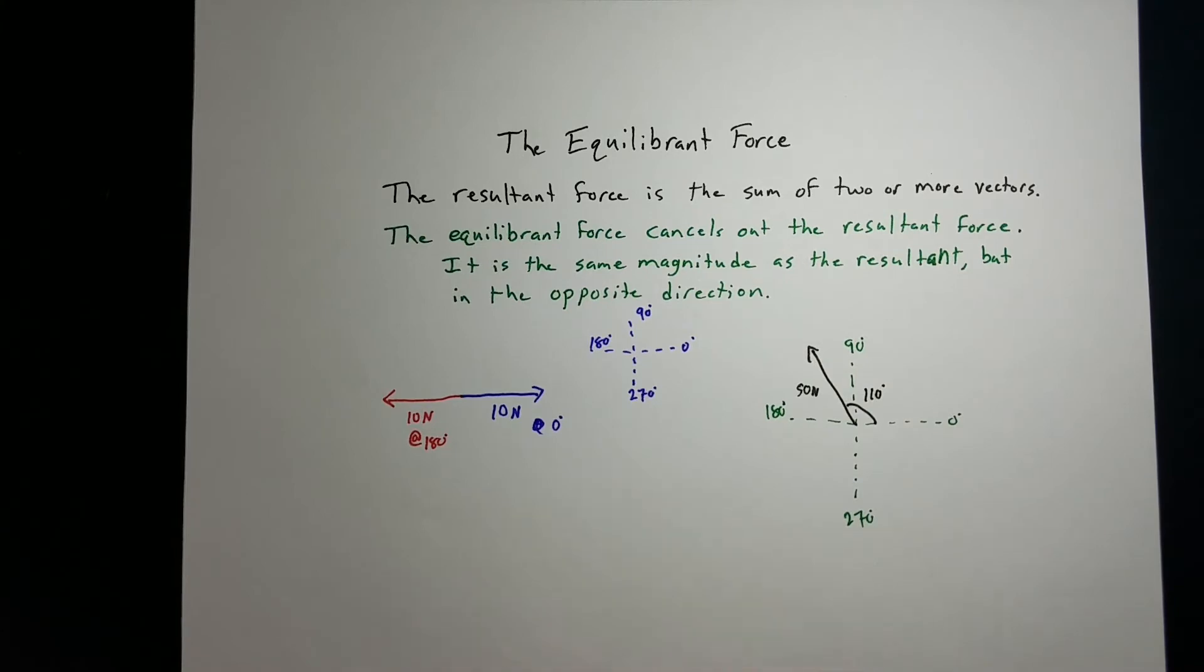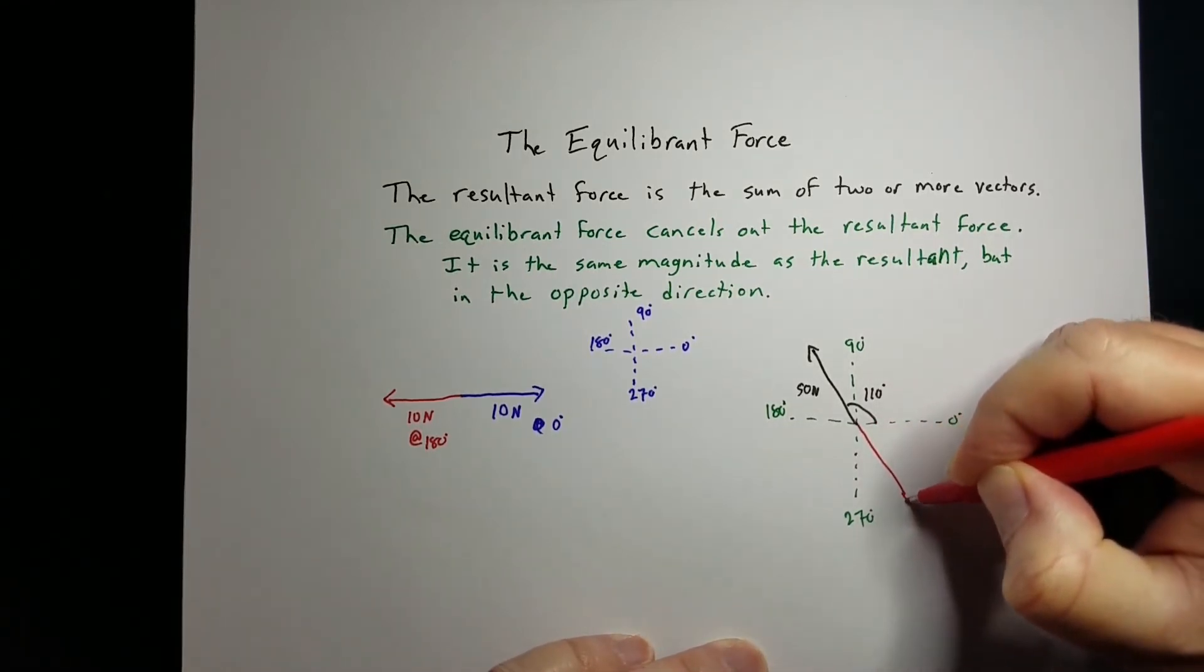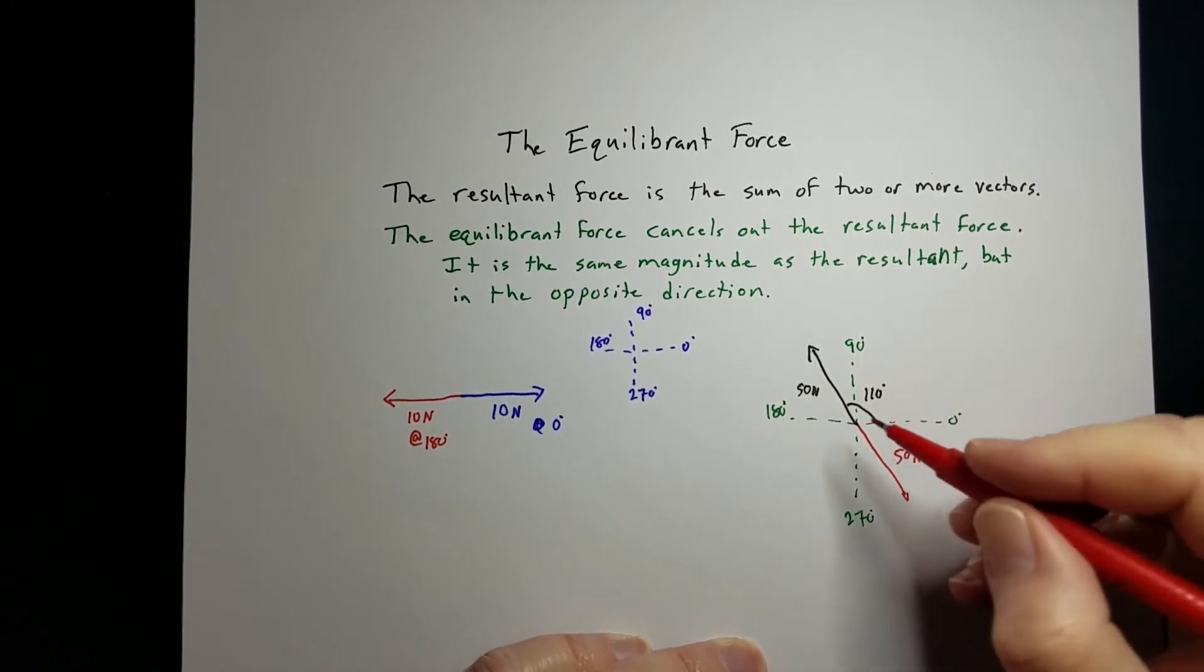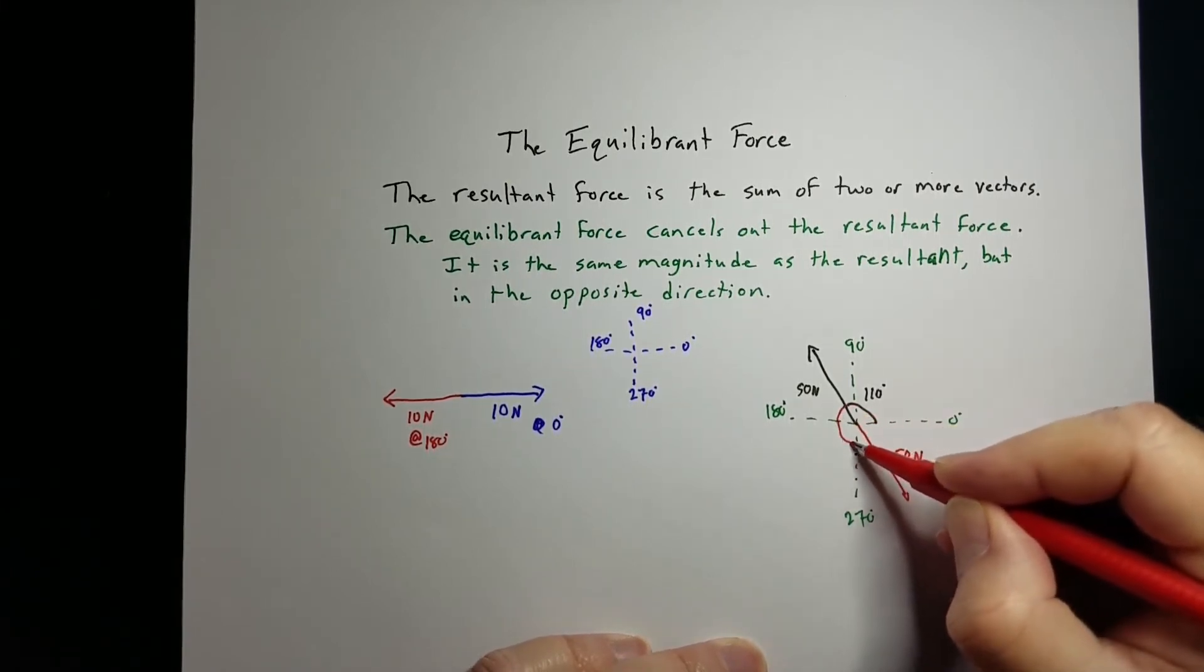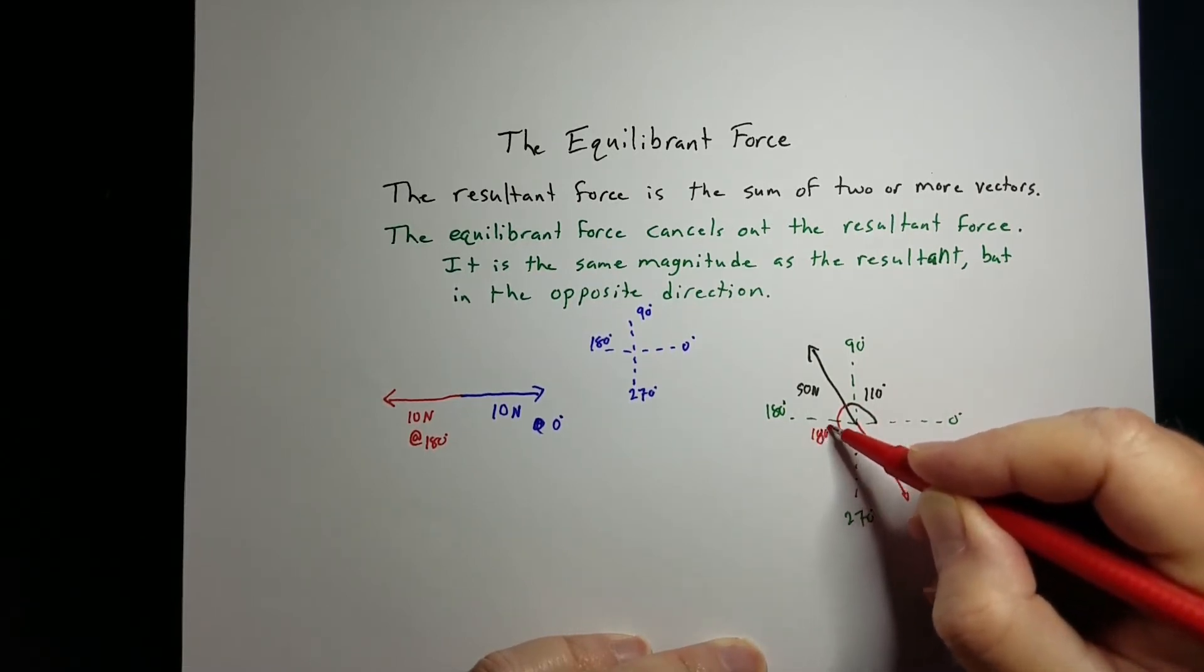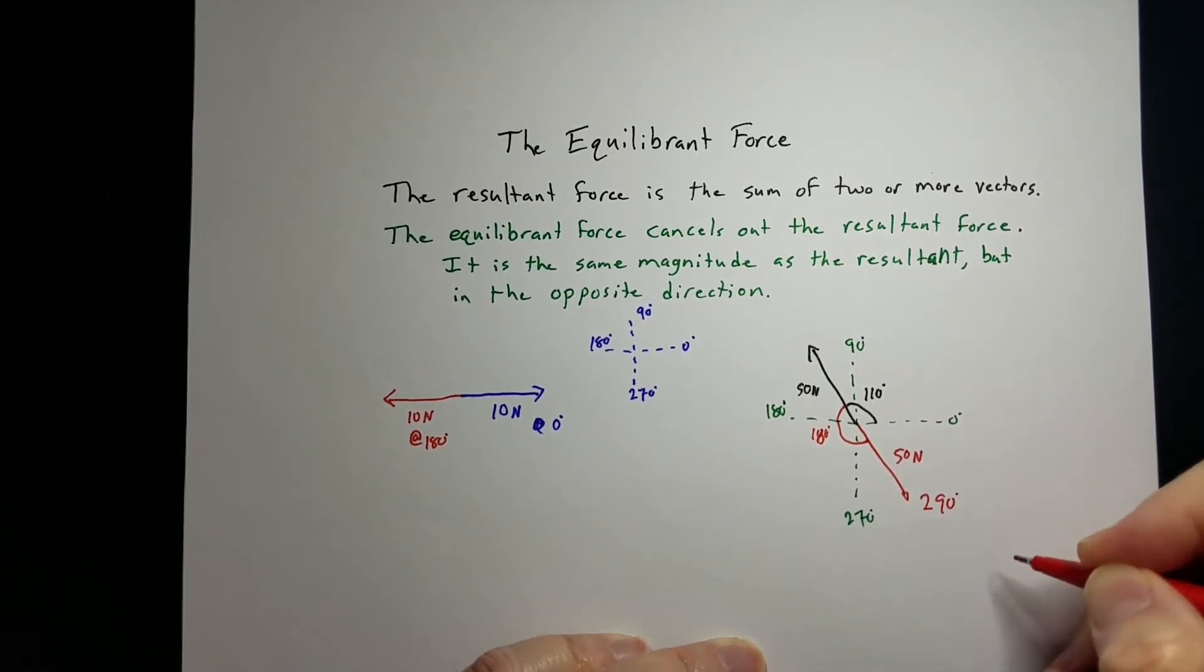My resultant force is that. My equilibrium will be the exact same magnitude but opposite direction, so 50 newtons, and we add 180 degrees to that. We add 180 to that, so this will be at 290 degrees. That will cancel out that vector.